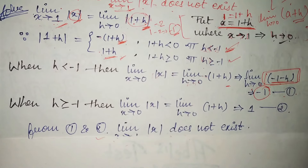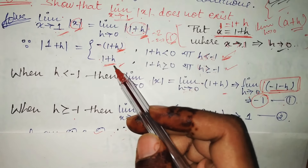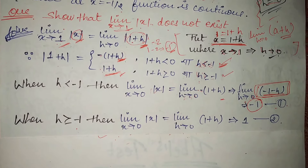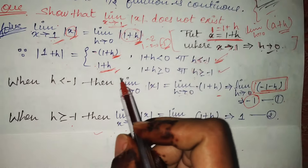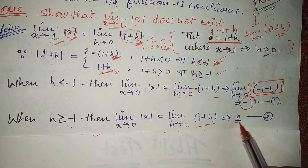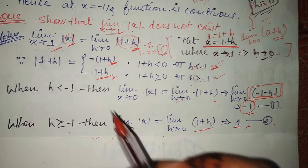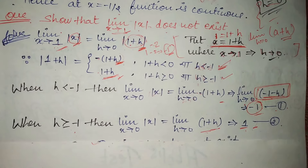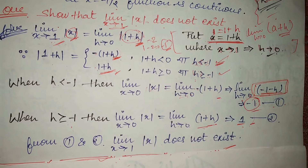For the second condition — h greater than or equal to minus 1 — the function is (1 + h), which is positive, so it stays as is. Substituting h = 0 gives 1 plus 0 = 1. Now, a was given as 1. So the three values are: first result = minus 1, second result = 1, and a = 1. All three values are different, so our condition is not fulfilled. Therefore, the limit does not exist.